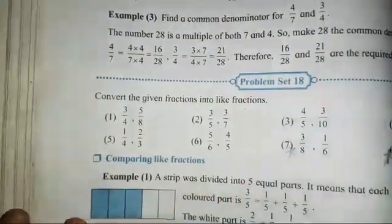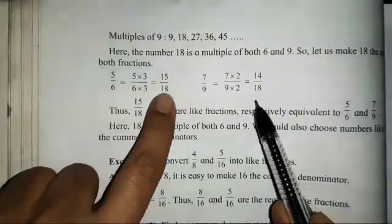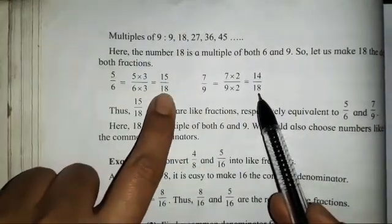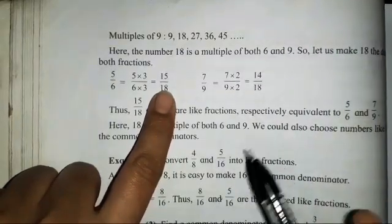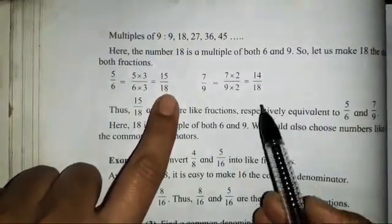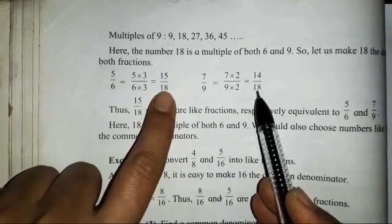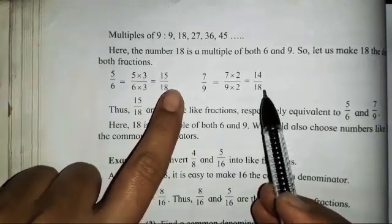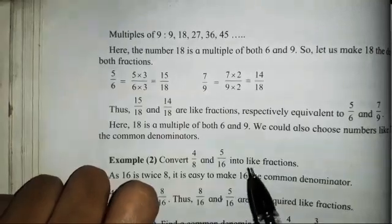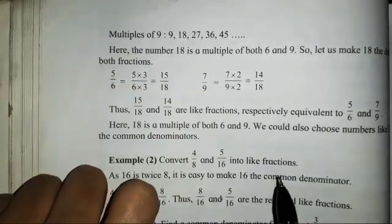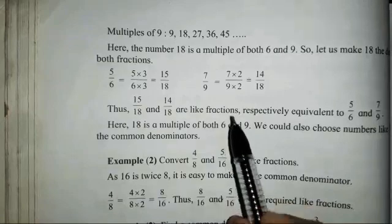Now, what are like fractions? When we get the denominators the same — this is the example from page number 24 — when the denominators are equal, the same number, then we can say the fractions are like fractions. It is very simple; you all have to just find the common number.